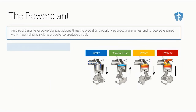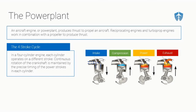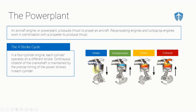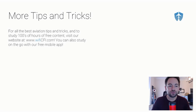In a four-cylinder engine, each cylinder operates on a different stroke — so cylinder one is on the intake stroke, cylinder two is on compression, three on power, and four on exhaust. They're always on different strokes. Continuous rotation of the crankshaft is maintained by the precise timing of the power strokes in each cylinder, so they all work together and no pistons are working against each other.